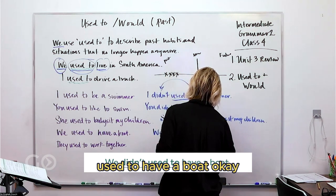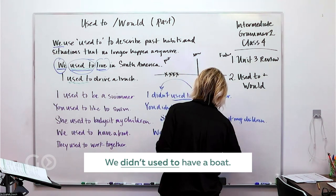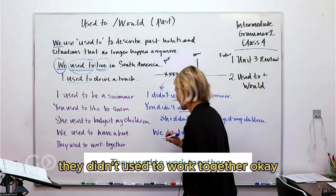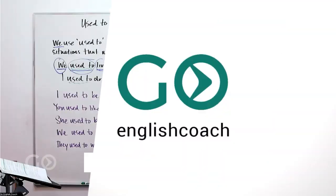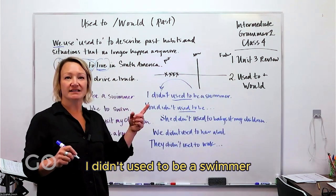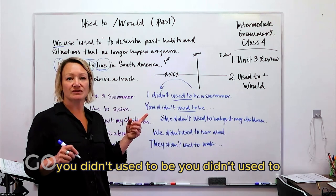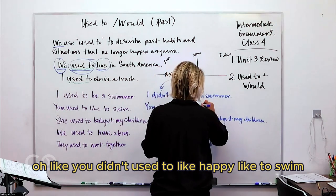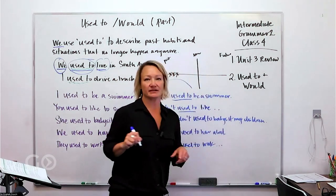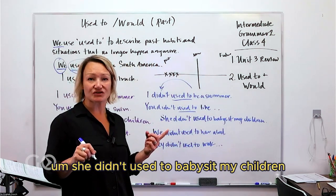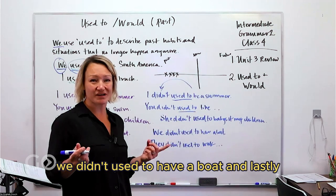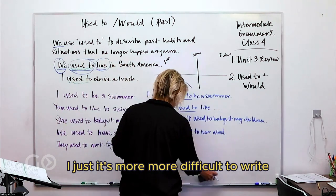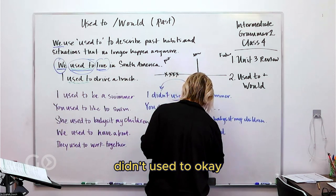Continuing our negative sentences: 'We didn't use to have a boat.' And the final one: 'They used to work together' becomes 'They didn't use to work together.' So all together: 'I didn't use to be a swimmer,' 'You didn't use to like to swim,' 'She didn't use to babysit my children,' 'We didn't use to have a boat,' 'They didn't use to work together.'